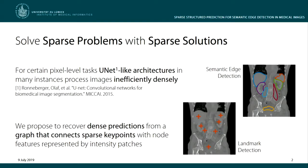We all know that convolutional encoder-decoder architectures like the U-Net are a powerful tool in medical image analysis, but we think for certain pixel-level tasks like semantic edge detection or landmark detection,